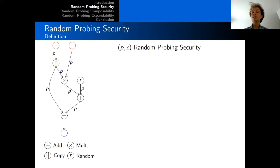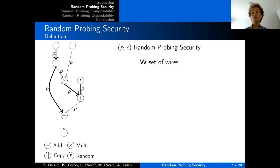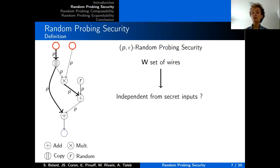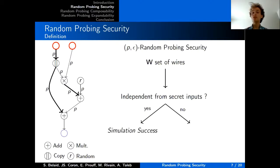In the random probing model, since each wire leaks independently with probability p, we formalize this by the notion of a set of leaking wires W. This set can be thought of as a random variable output from a random process in which each wire in the circuit is added to W with probability p, independently of the other wires. Such a circuit is said to be p-epsilon random probing secure if for any set W of leaking wires, this set should be independent from the secret inputs, meaning it does not require the knowledge of the secret values to be simulated. If it is independent, we say we have a simulation success; if not, we say we have a simulation failure, and we associate this failure event with a probability function epsilon.